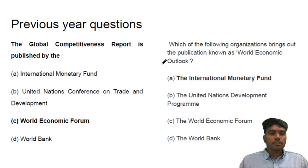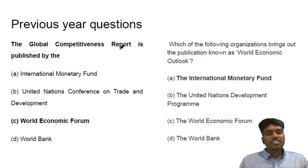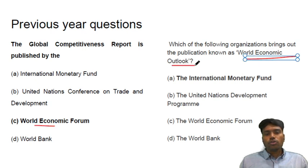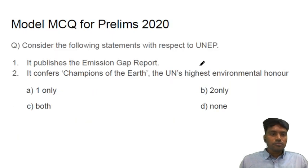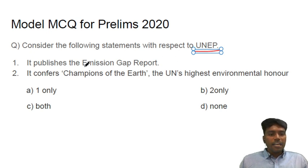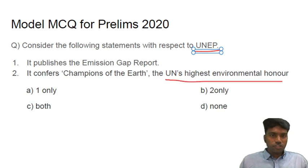UPSC has already asked certain previous year questions on reports. For example, the Global Competitiveness Report, asked in 2019, is given by the World Economic Forum. Similarly, there is another question regarding the World Economic Outlook, which is given by the IMF. These are important facts to focus on. For our model MCQ: which among the following are true with respect to UNEP? It publishes the Emission Gap Report — yes, we have seen that. It confers Champions of the Earth, which is the UN's highest environment award — this is also true. These are more factual-oriented questions.